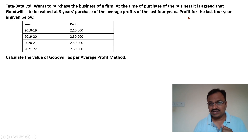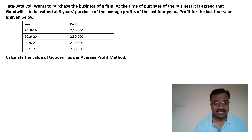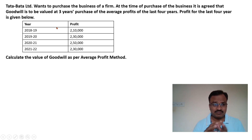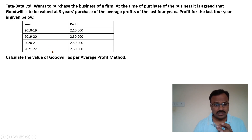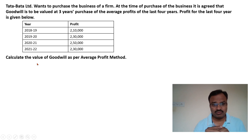The question further says profit for the last four years is given in the table from 2018-19 to 2021-22. The question asks us to calculate the value of goodwill as per the average profit method.